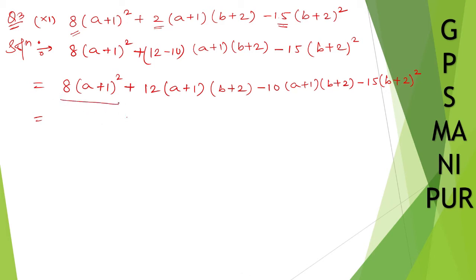From this one and this one, one thing we can take common is (a+1). Another, we can take common from 8 and 12, which is 4. So here we have taken 4 out, so what's left is 2(a+1). From here, (a+1) taken out, so what's left is (a+1). Plus 4 goes out from here, so 3 is left out. (a+1) goes out, so what's left is (b+2).